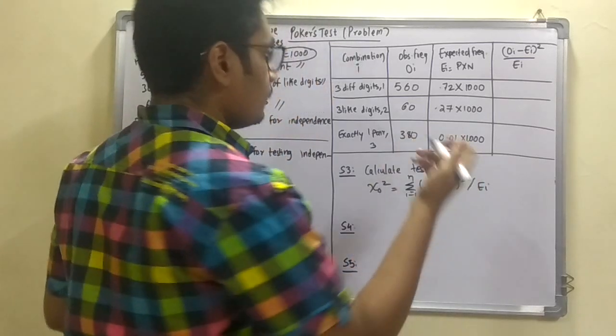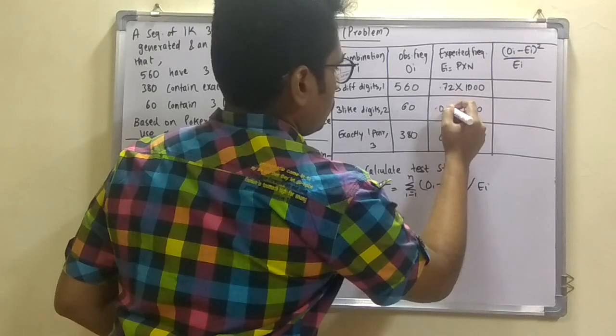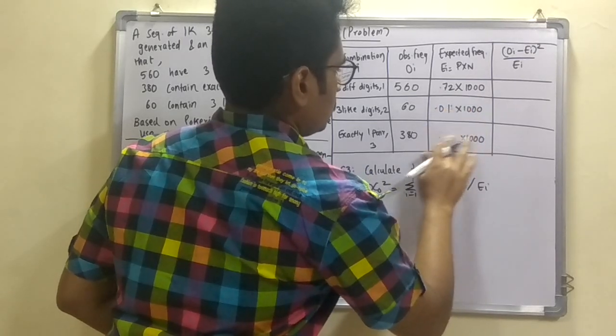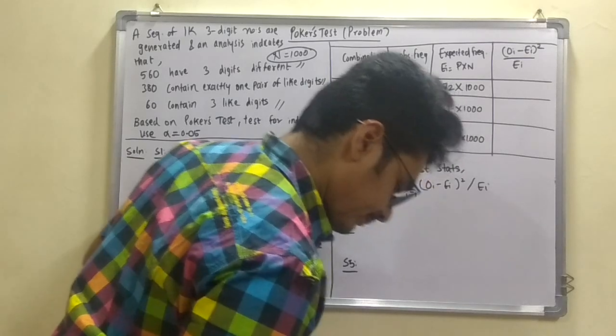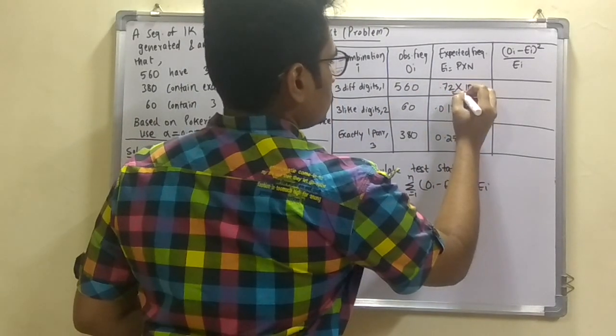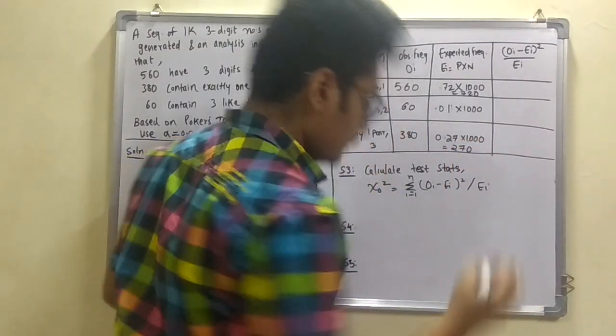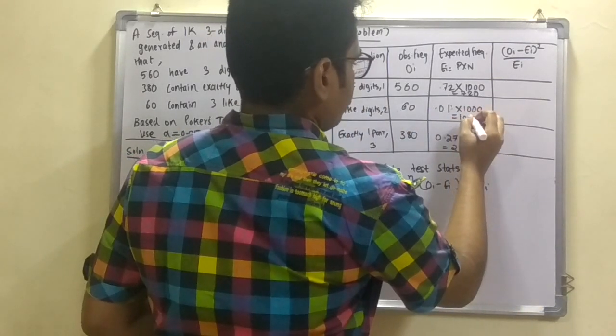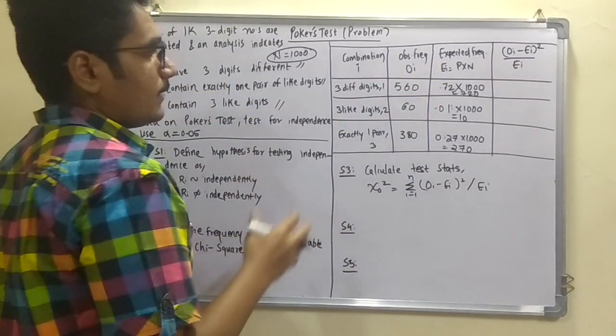So this was the conditions which we have observed here. So the values. This one. This is just what interchange 0.01 it is. And this is 0.27. And so we have to calculate this. So this will come to be 720. This will be 270. And this will be 10. So these are the expected frequencies which we get from this.